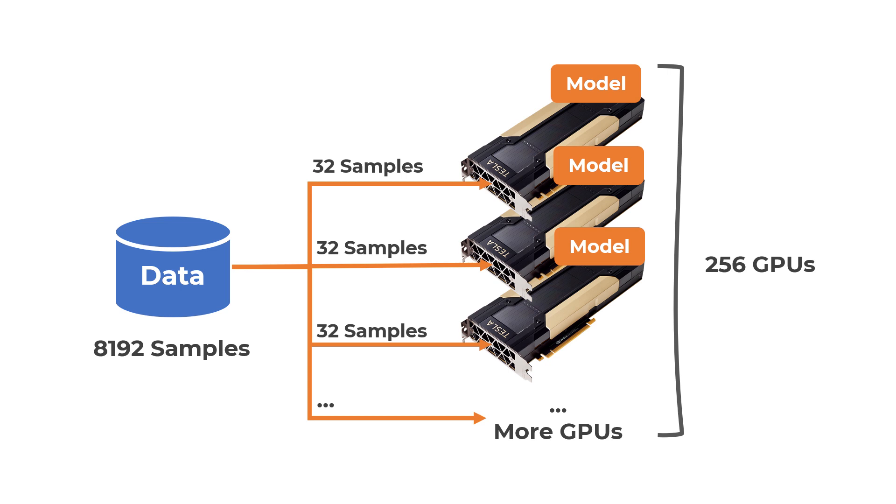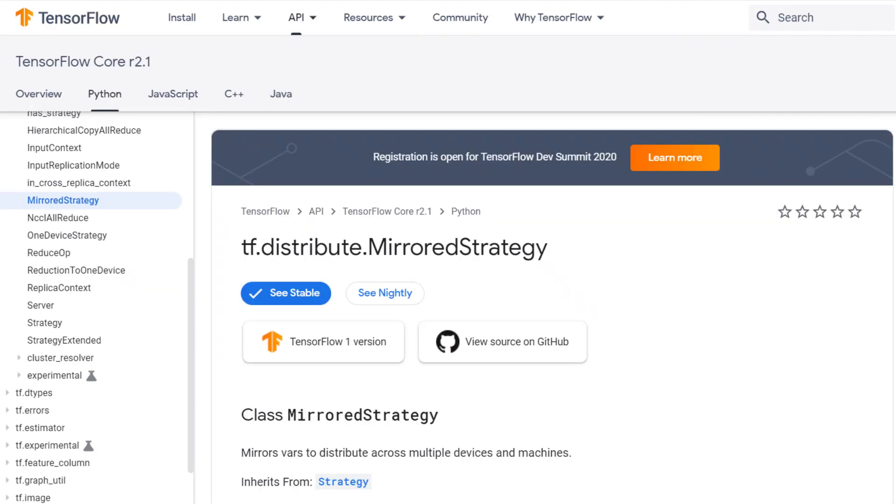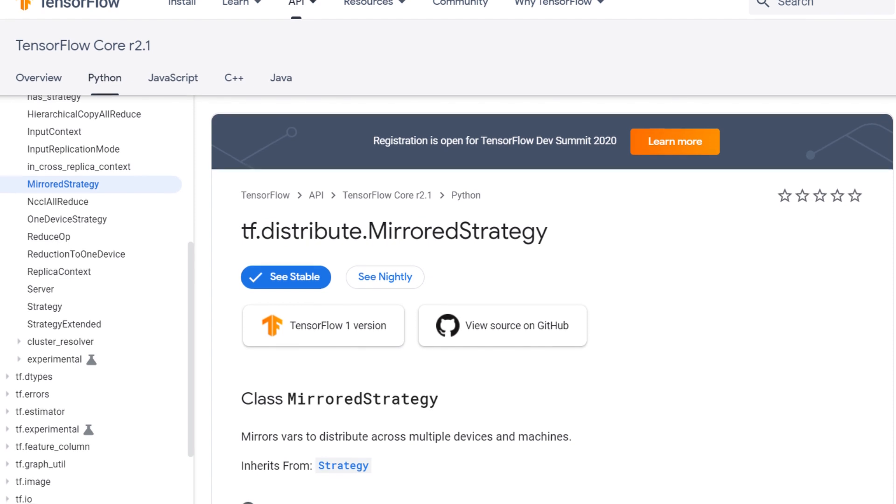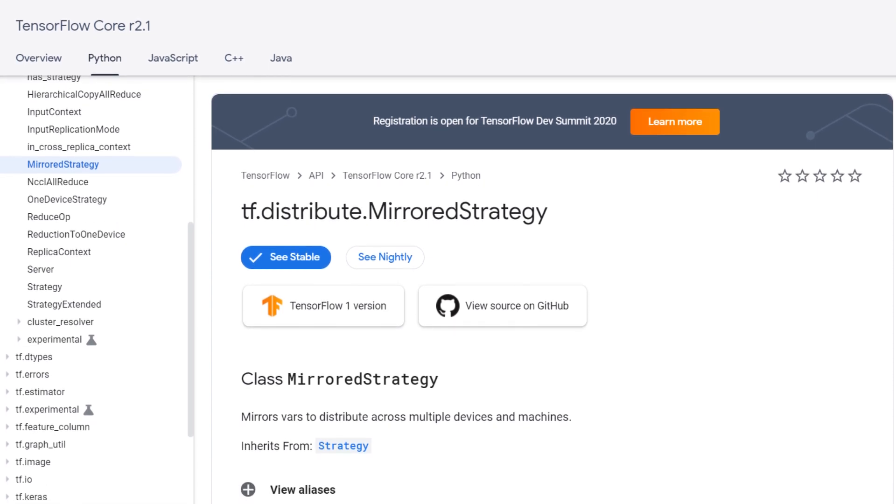Therefore, the copies on different GPUs don't diverge from each other. TensorFlow calls this approach a mirrored strategy. Yet this approach has some shortcomings.